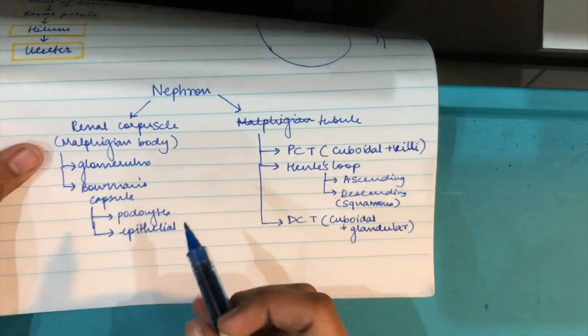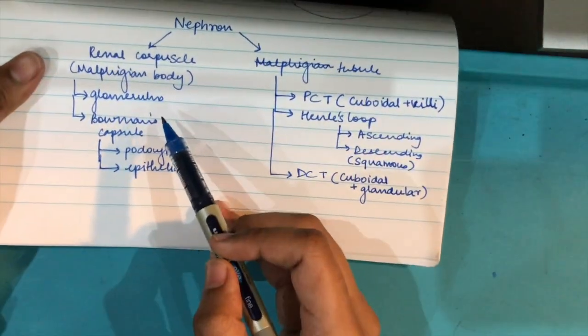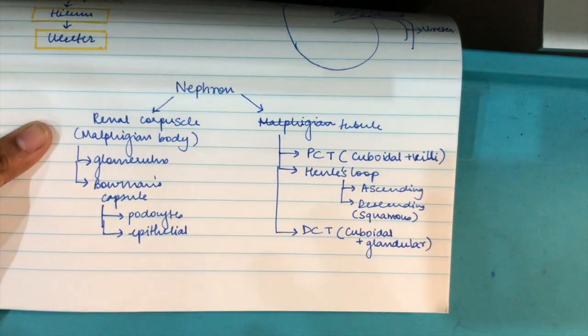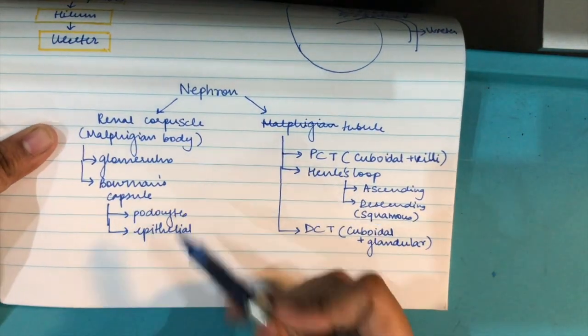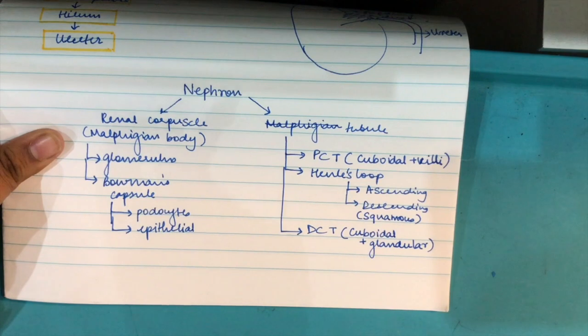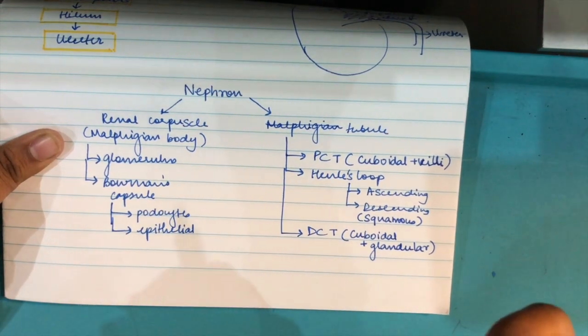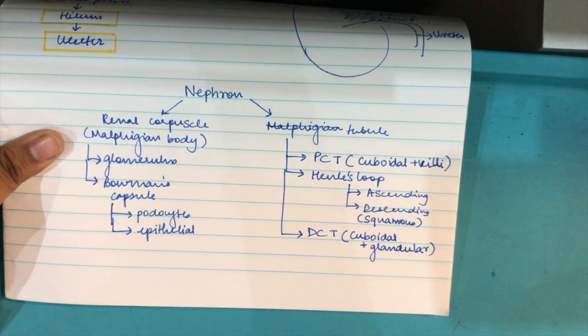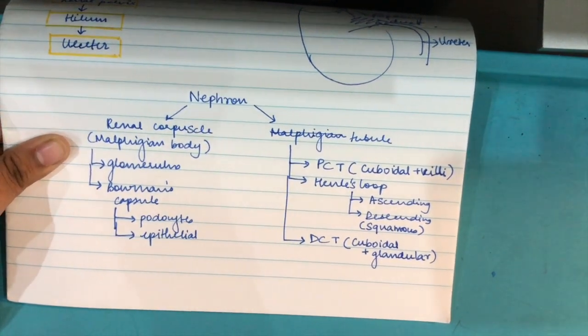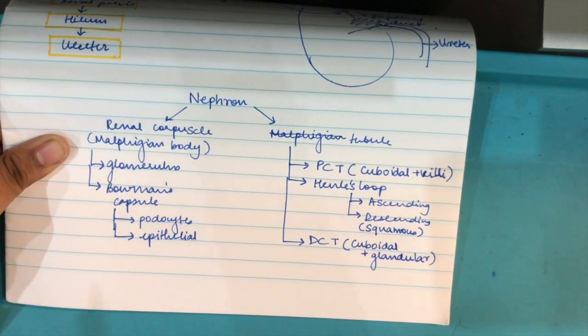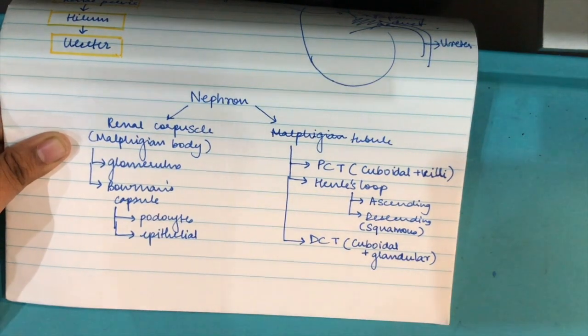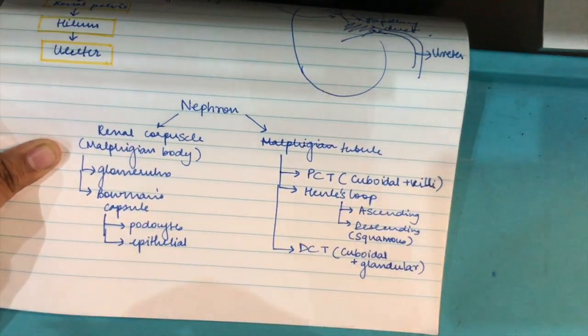The Malpighian - I mean the glomerulus along with the Bowman's capsule will form the renal corpuscle. Let's come to the structure of it. Glomerulus is just the arteries, the afferent arteriole which forms a small tuft. Bowman's capsule is made up of cells known as podocytes which are epithelial cells. Bowman's capsule, there is a diffusion of blood through the surface and for diffusion we already have learned that epithelial cells are best because they're thin and diffusion can happen easily.